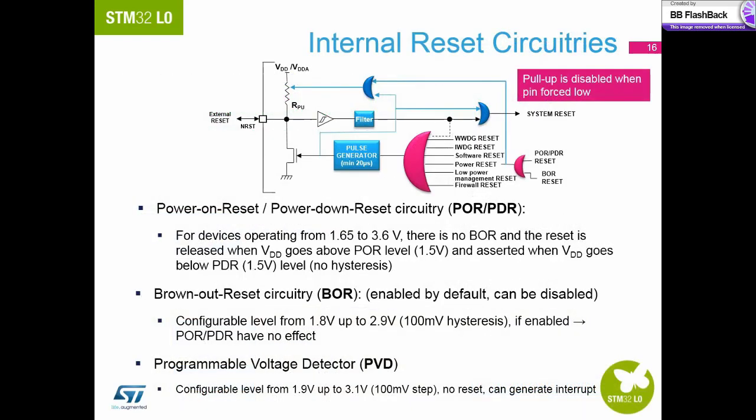Just like the clock tree, we have multiple sources for reset. There is the typical power on and power down resets, and in addition to that, there is the brown out reset. Then we have a programmable voltage detect peripheral. This can be configured to generate an interrupt as the power drops so you can save critical information to EEPROM or shut down the device safely before the power reaches the brown out or power down reset value. Other peripherals on the STM32L0 can also trigger resets, like the watchdog or the firewall.